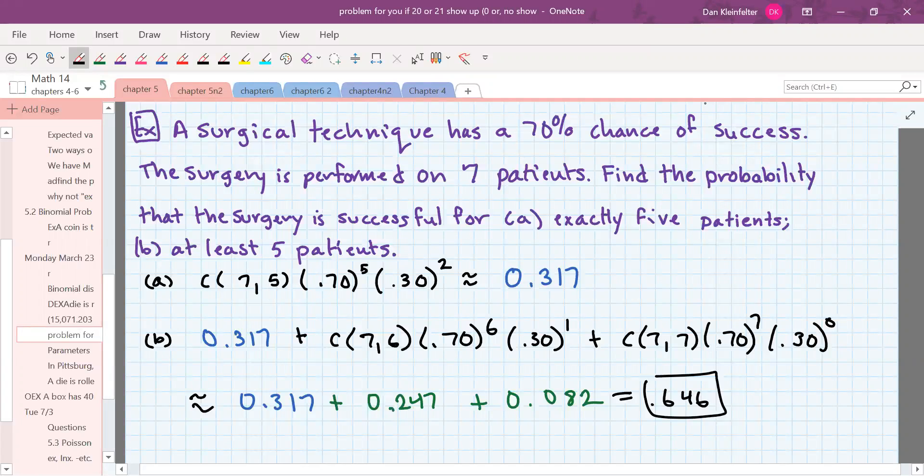All right, so the probability of success for exactly five patients worked out to be about 0.317. For at least five patients, we need five, six, and seven. So for five, we have 0.317. For six, it worked out to be about 0.247. And for seven, about 0.082. Altogether, that makes a probability of about 0.646.